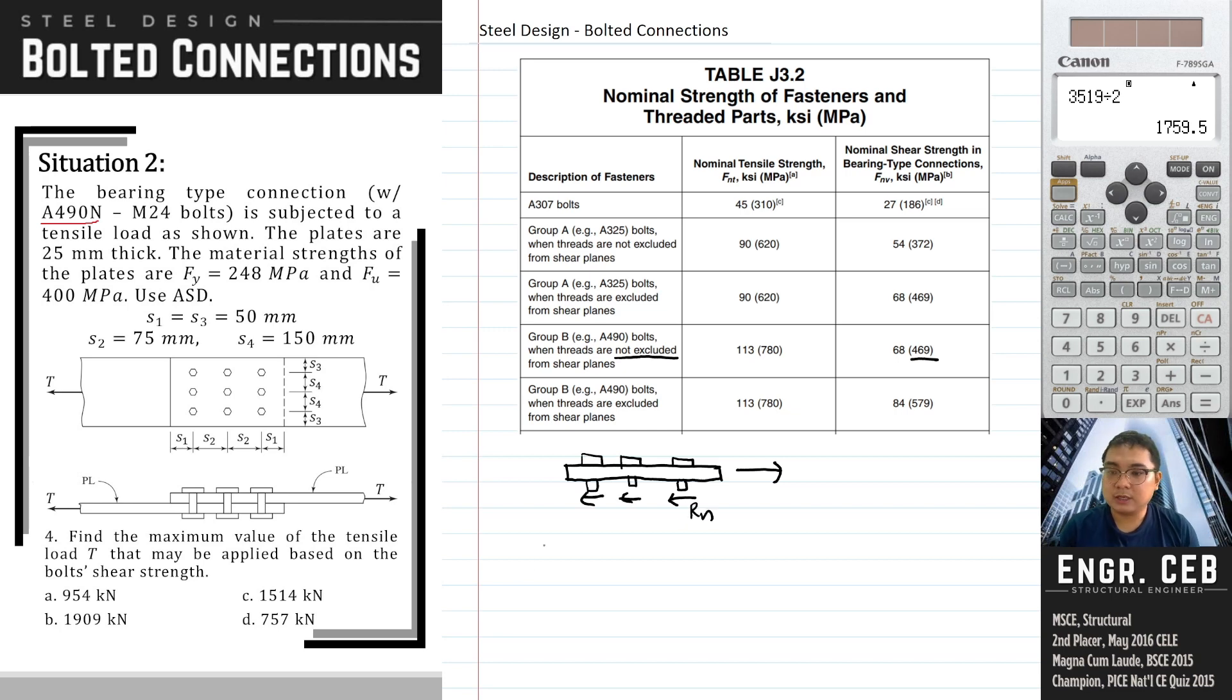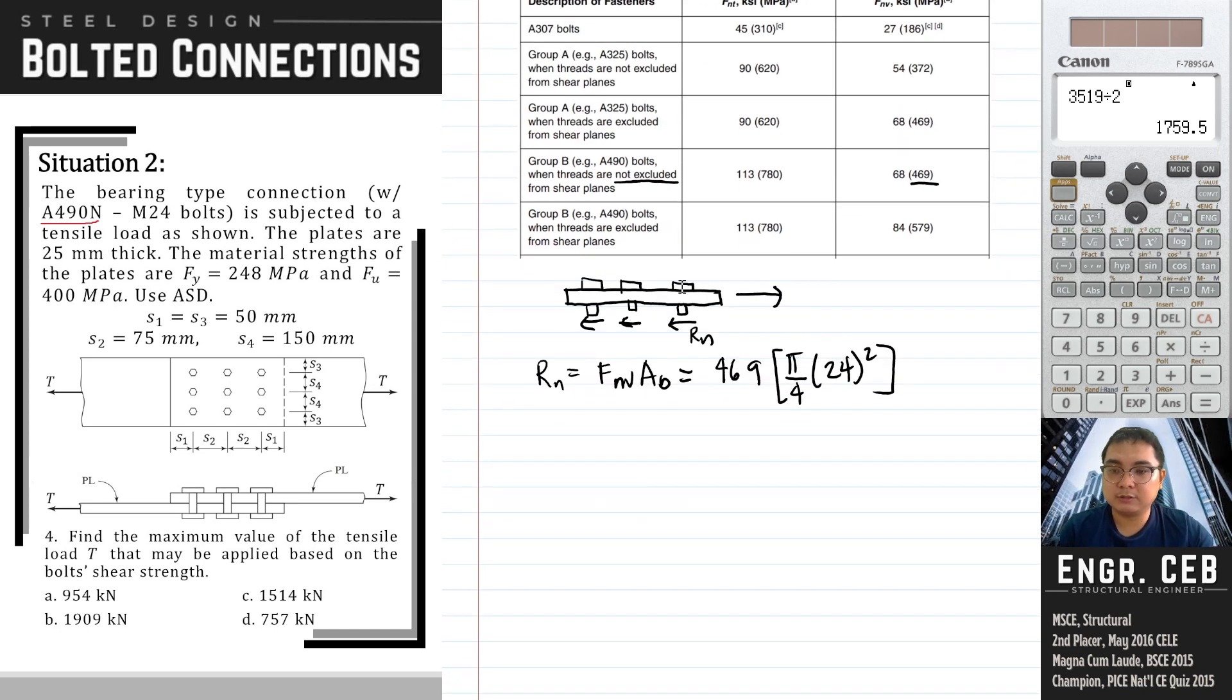So let us solve. That is F sub NB times the area of the bolt. We have F sub NB is 469, and then the area of the bolt is pi over 4 times 24 squared. So we can now solve for the nominal shear strength of one bolt. Nominal shear strength of one bolt is 212,170.615 N.